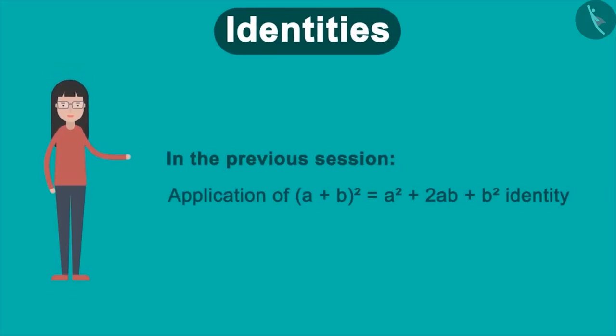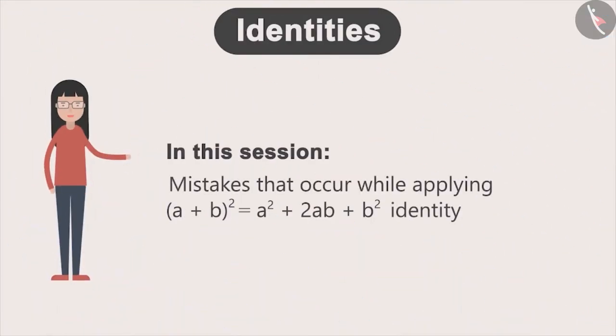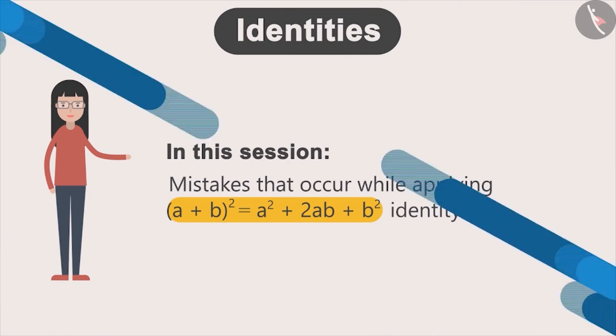In the previous session we have seen some examples and how this identity is applied. In this session we will look at some common mistakes which occur while applying this identity. Let's look at the first mistake.